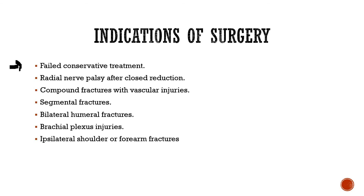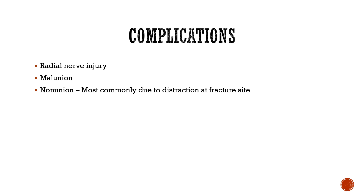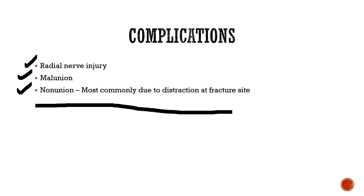Indications for surgery include failure of conservative treatment, radial nerve palsy after closed reduction, compound fracture, segmental fracture, bilateral humerus fracture, brachial plexus or nerve injuries, or ipsilateral shoulder or forearm fractures. The most common complication is radial nerve injury causing wrist drop. Non-union most commonly occurs due to distraction at the fracture site, as the hanging arm position allows gravity to distract the fracture.